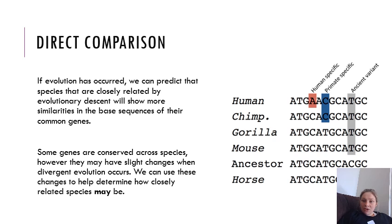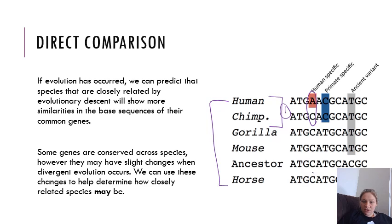Comparing a human and a primate, they have very few differences — only one difference in their DNA sequence. Comparing a human to a horse, there are three differences in the same stretch of sequence. So the more differences you have in your DNA sequence, the less closely related the species are.